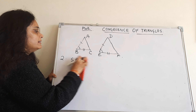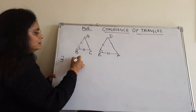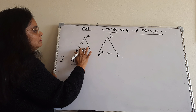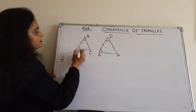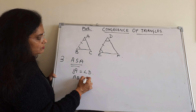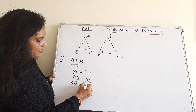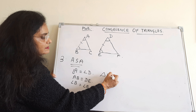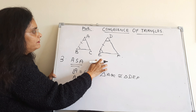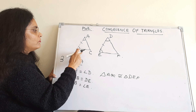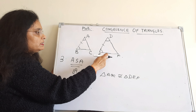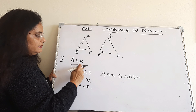The third one is the Angle-Side-Angle congruence rule — two angles and the included side. Here angle A is equal to angle D, side AB is equal to DE, and angle B is equal to angle E. Then triangle ABC is congruent with triangle DEF. Two triangles are congruent if two angles and the included side of one triangle are equal to the two angles and the included side of the other triangle.